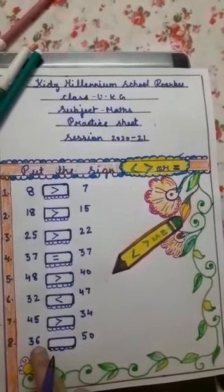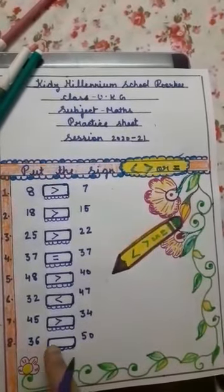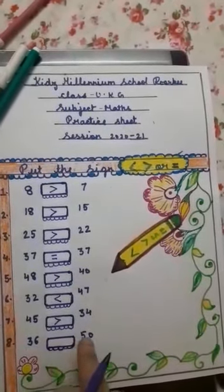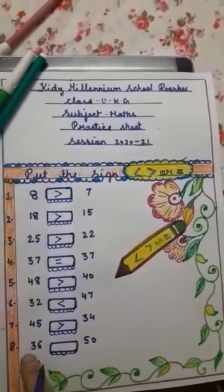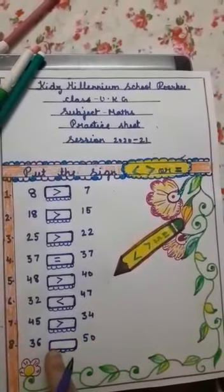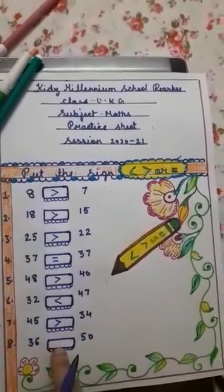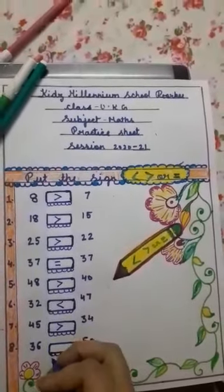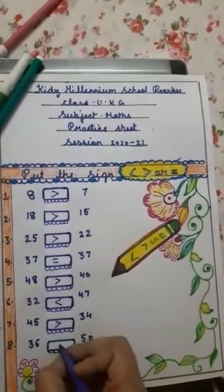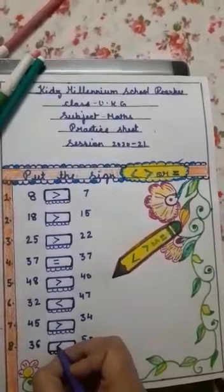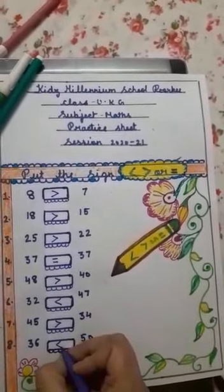Last question is 36 blank space 50. Comparatively, 36 is the smaller number, so here the less than sign is used. This is the less than sign.